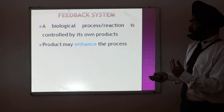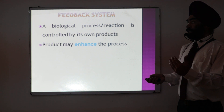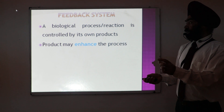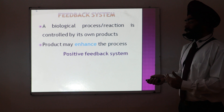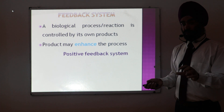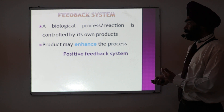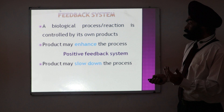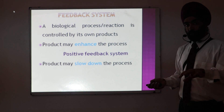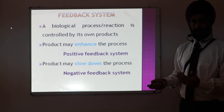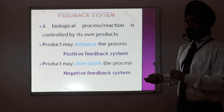If the product — that means the outcome — enhances the process, I call it a positive feedback system. For example, putting the foot on the accelerator makes the car move faster — that is enhancing the process, a positive feedback mechanism. But if the product slows down the process — putting my foot on the brake slows things down — that is a negative feedback system. Both positive and negative systems exist in the body to maintain homeostasis.